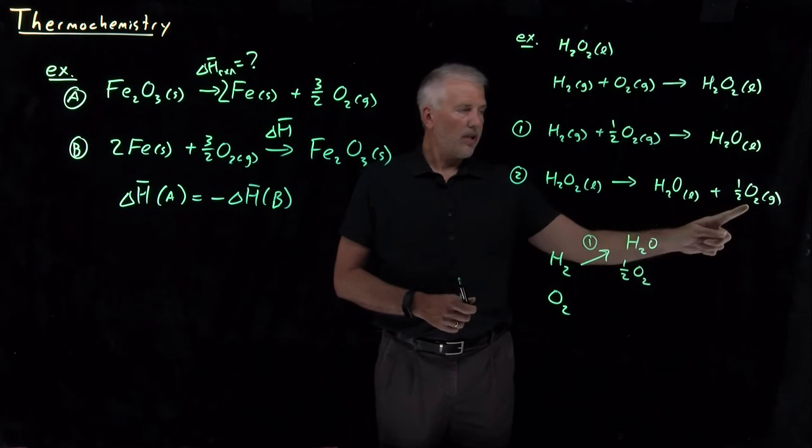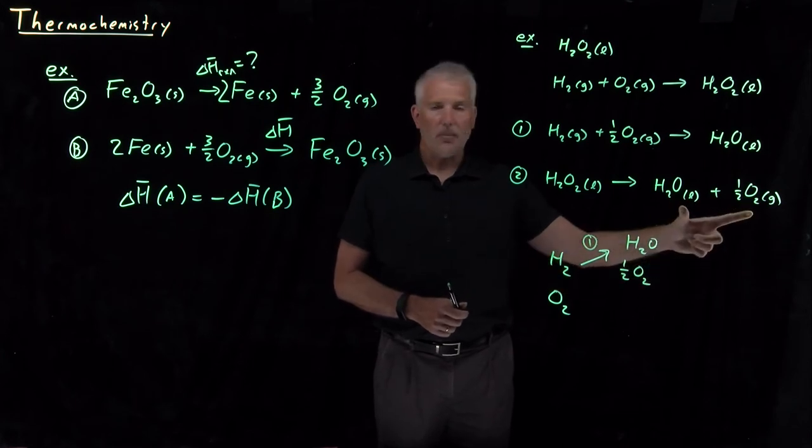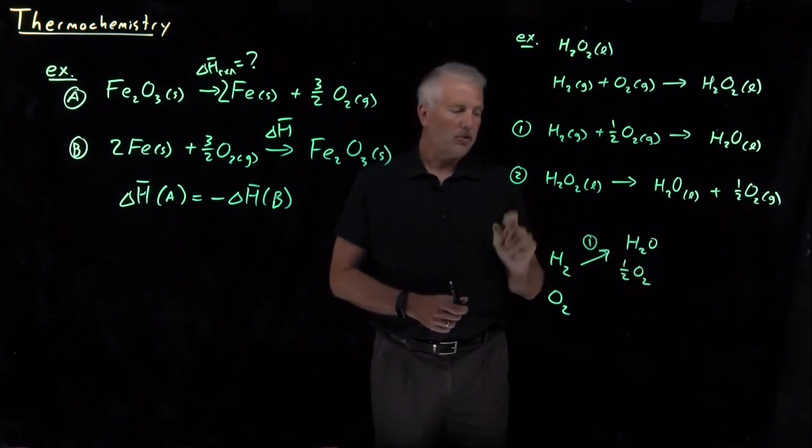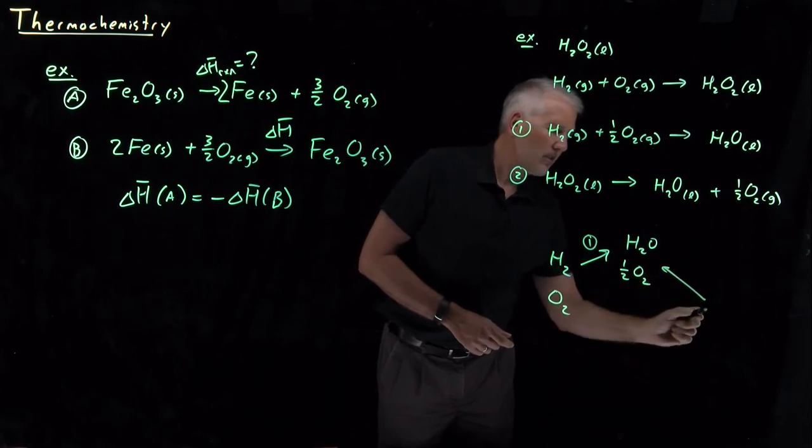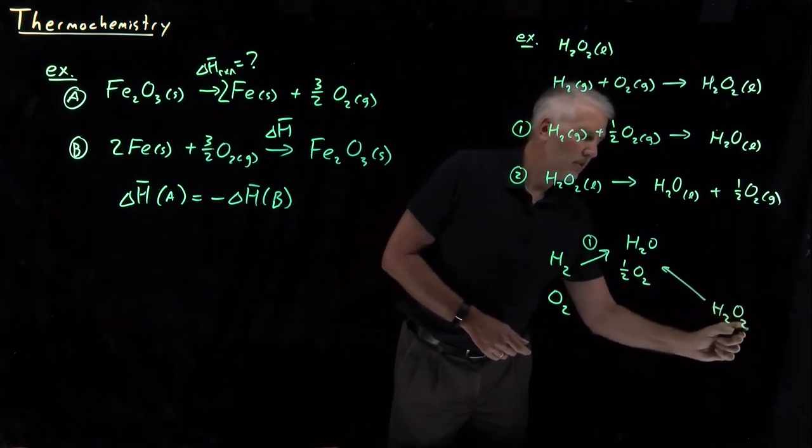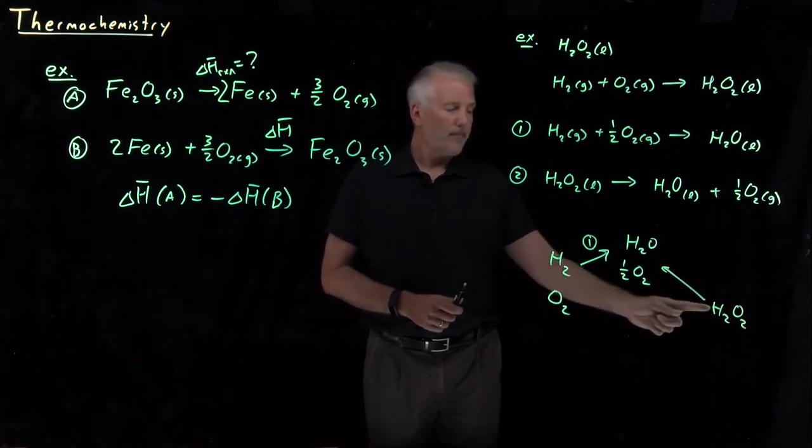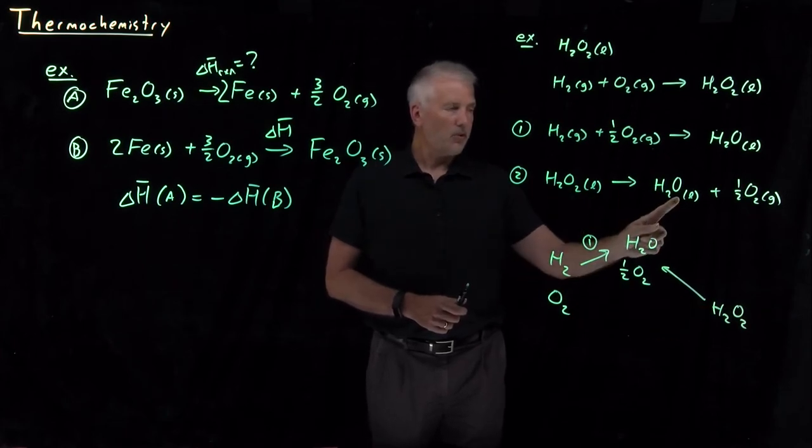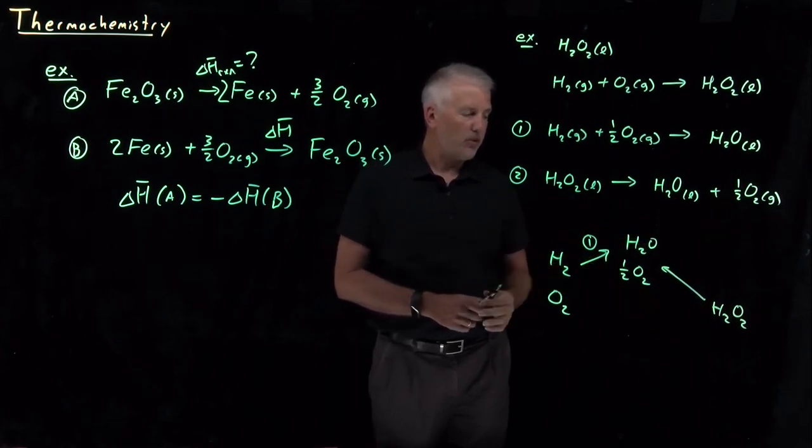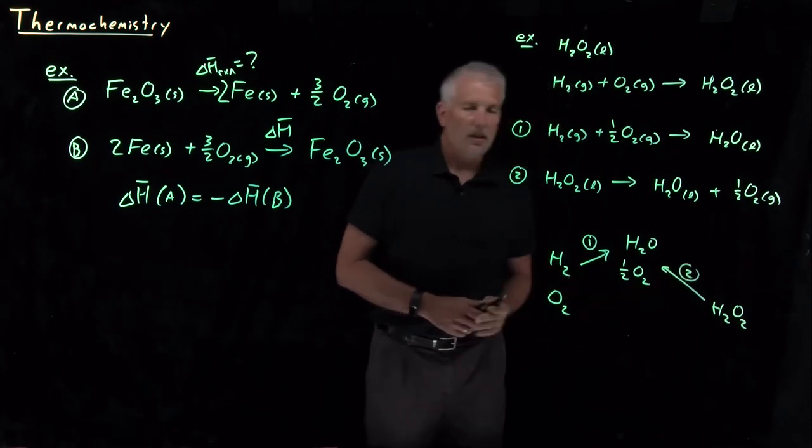But water and a half a mole of O2, those are exactly the products in this reaction number two. So as products, hydrogen peroxide decomposing into water and one half an O2, that's reaction number two.